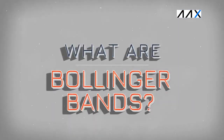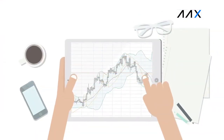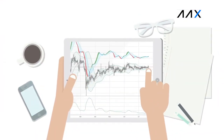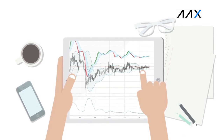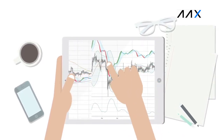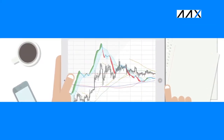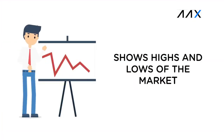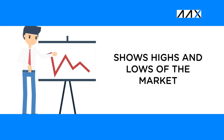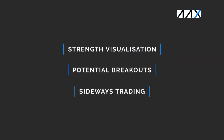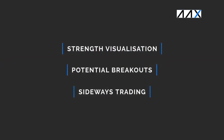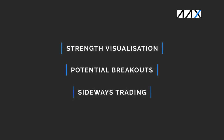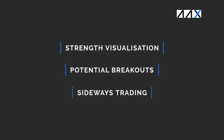What are Bollinger Bands? Bollinger Bands, otherwise known as BBs, are a popular technical analysis tool used by traders all around the world. Bollinger Bands can do various things and are used to show the highs and lows of a market. They allow traders to visualise trend strength, potential breakouts, and also identify periods of sideways trading.